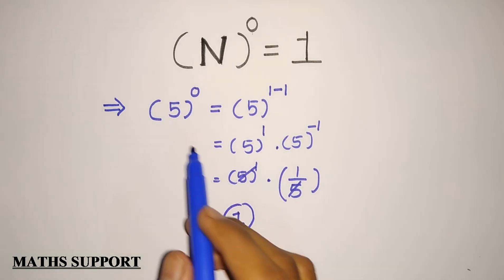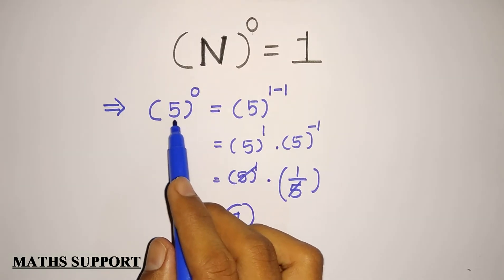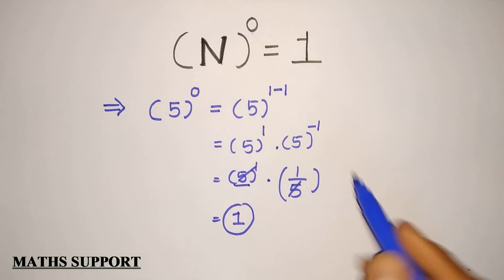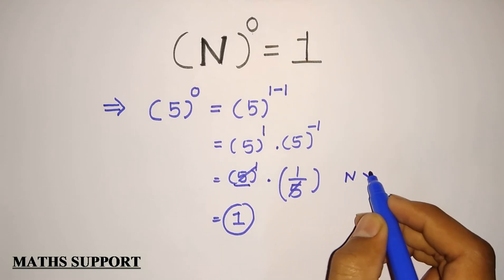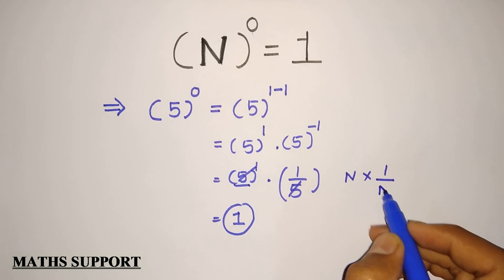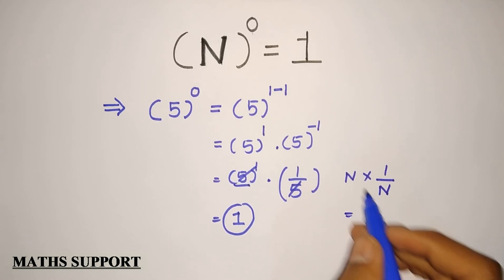Even though you are taking any number instead of 5, every time you are getting multiplication of that number n and its multiplicative inverse, that is 1 by n. So every time your number will be cut and you will get answer 1.